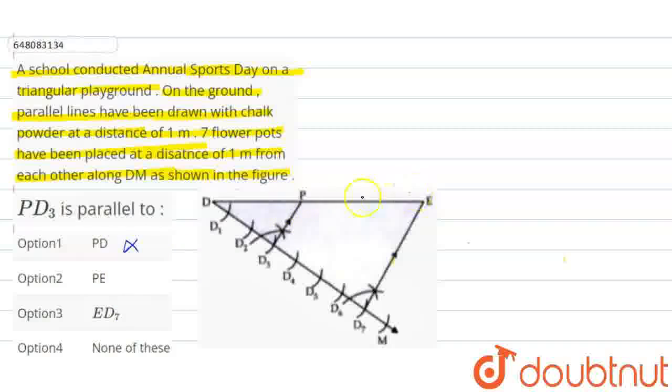Then, PE. PE and PD3 which intersects on the P point. So, this is wrong option.